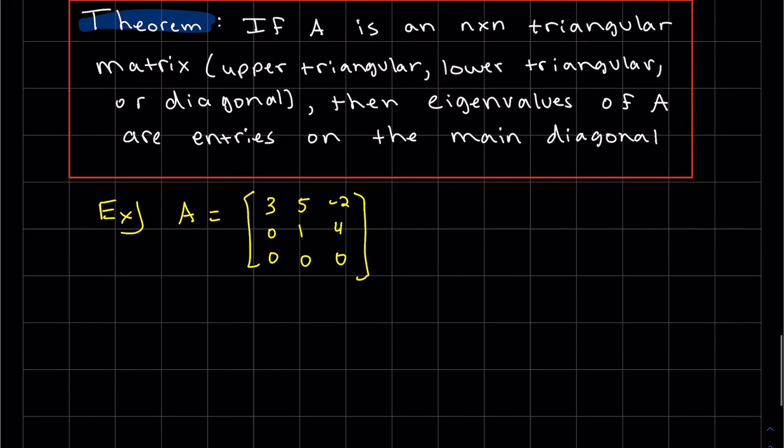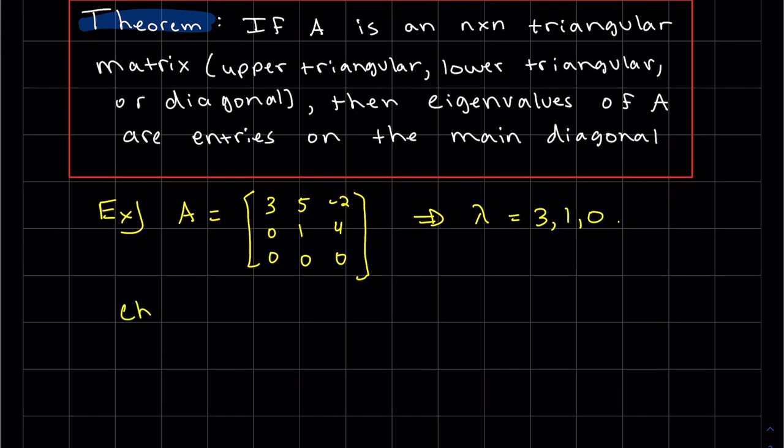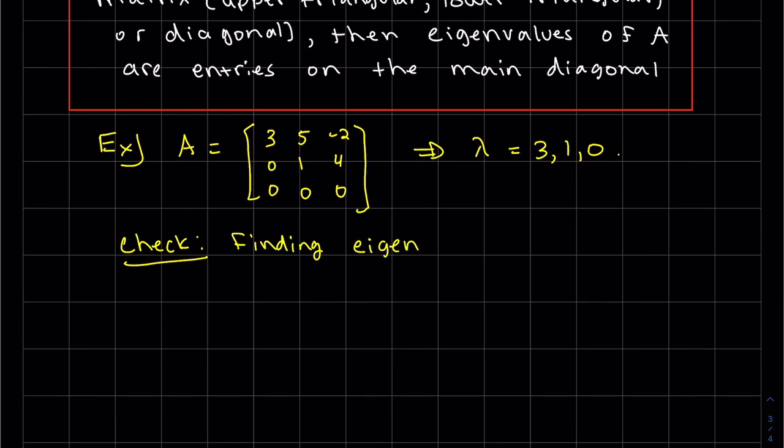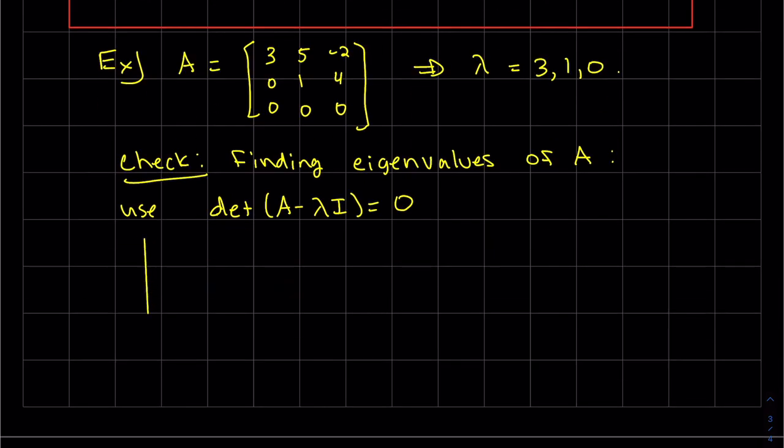So we're looking at a triangular matrix. And what this theorem says is that my lambdas are my entries along the main diagonal. So my lambdas are three, one, and zero. So we're not going to prove this. We're just going to check this one. So let's check. We're going to check by finding our eigenvalues of this matrix by our process. So we're going to use.